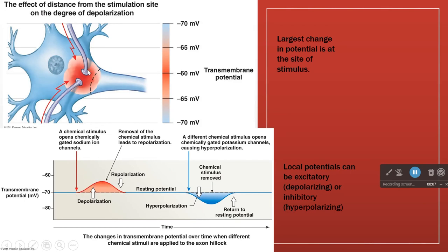If just one neuron was activated, we would get a depolarization and then a repolarization, and then it would go back to normal — no action potential. We only get an action potential if we get enough stimulation from enough other neurons to bring the whole cell to threshold.